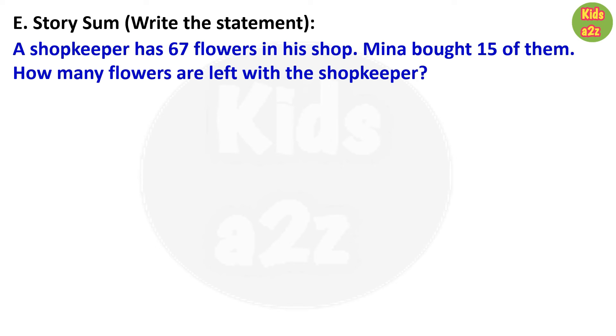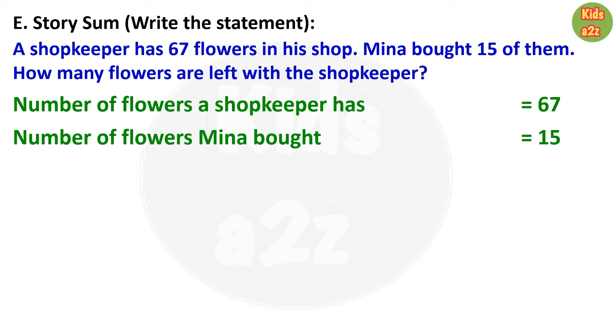So to solve this, kids need to write: number of flowers a shopkeeper has equals to 67. Number of flowers Mina bought equals to 15. Therefore, number of flowers left with the shopkeeper - that means here they need to subtract 15 from 67.